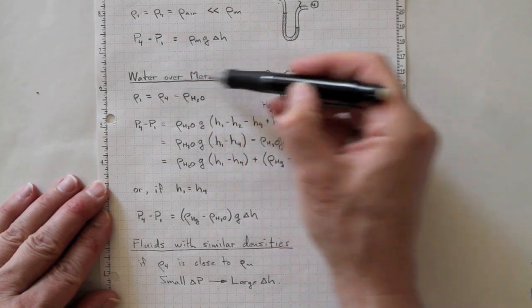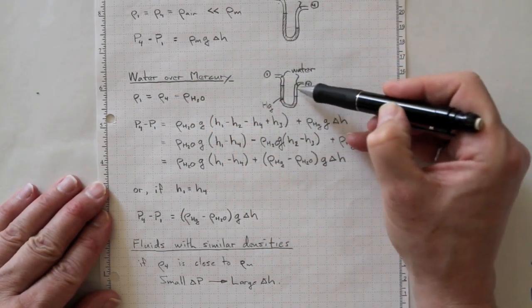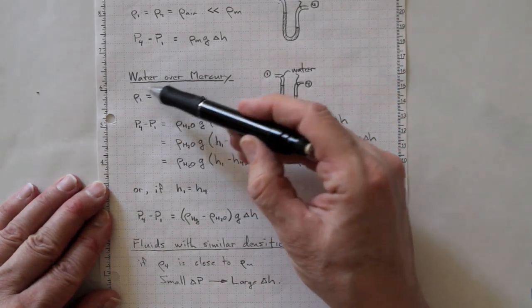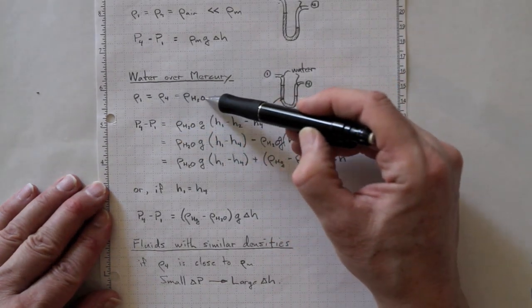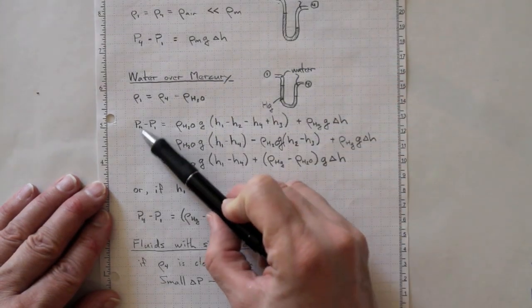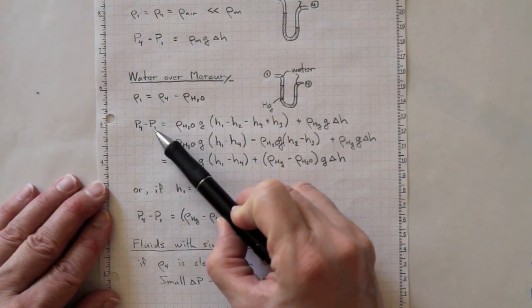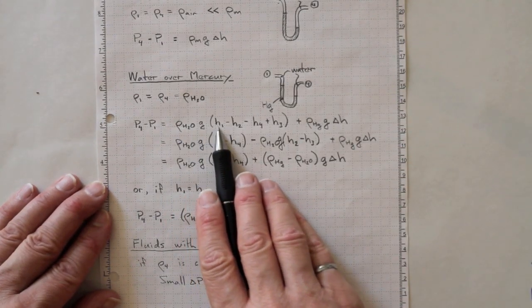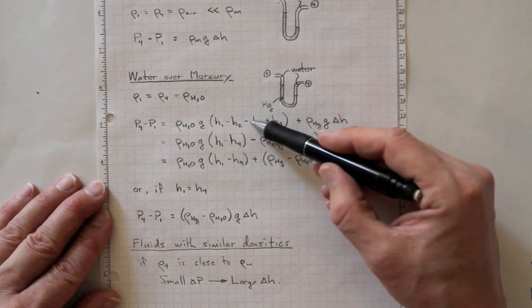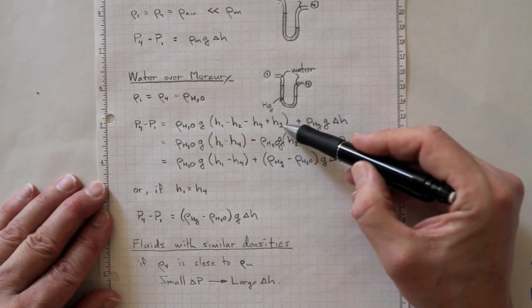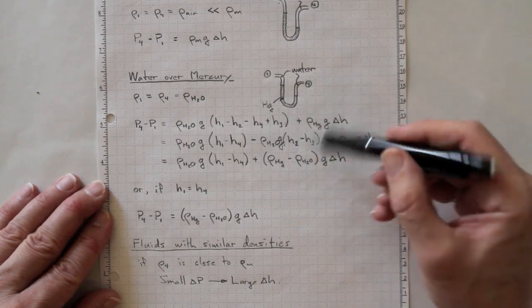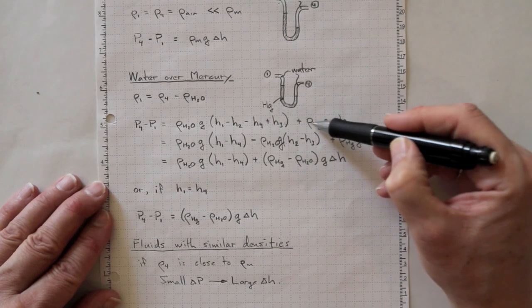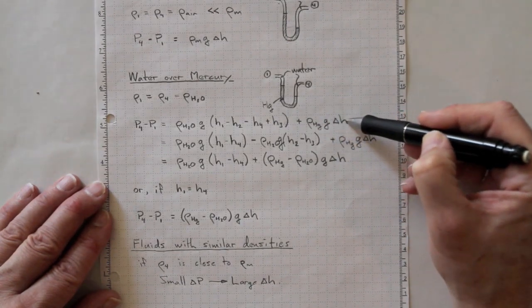Alternately, if we have water over mercury, so we've got water in here and water in here, then rho 1 is equal to rho 4 is the density of water, and the difference in pressure between 4 and 1 is rho H2O times G times H1 minus H2 minus H4 plus H3 gets us through all the water elements, and then an element for rho H2O times G delta H.